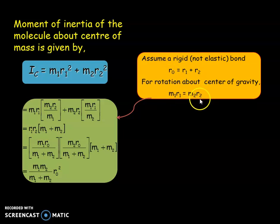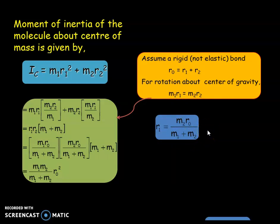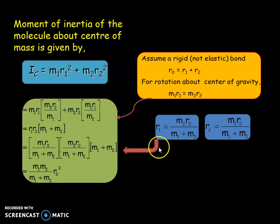Here, if you are substituting R2 as R1, we will get R1 as M2 R0 by M1 plus M2. Similarly, R2 becomes M1 R0 by M1 plus M2.